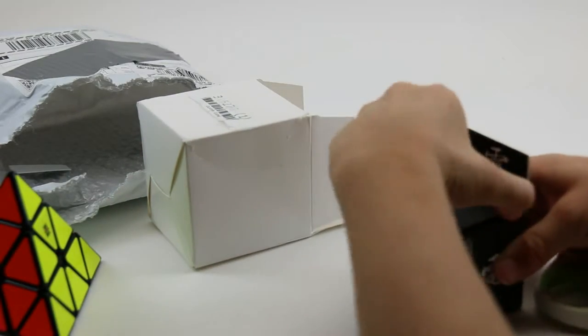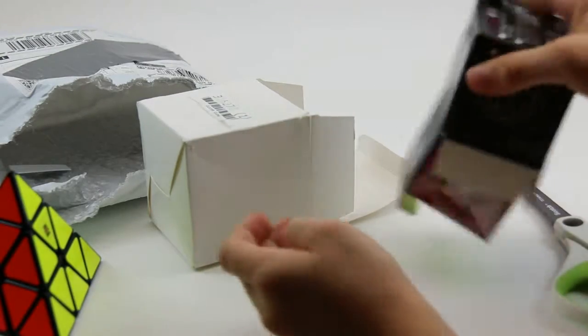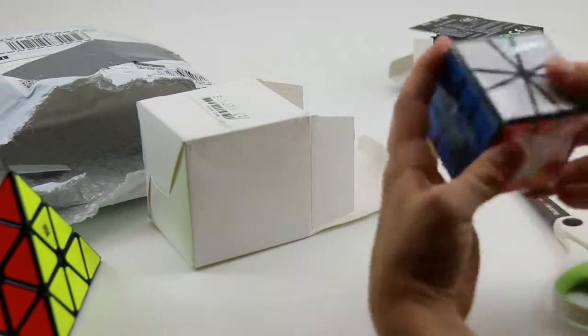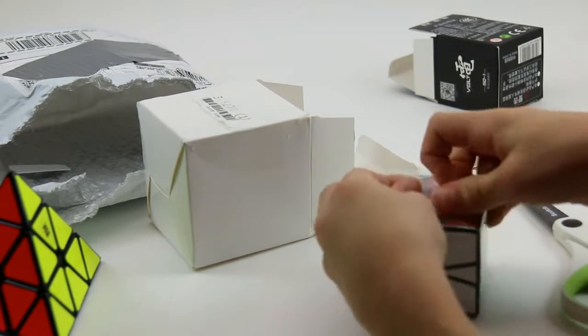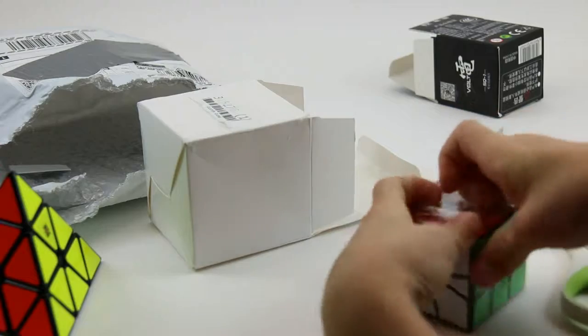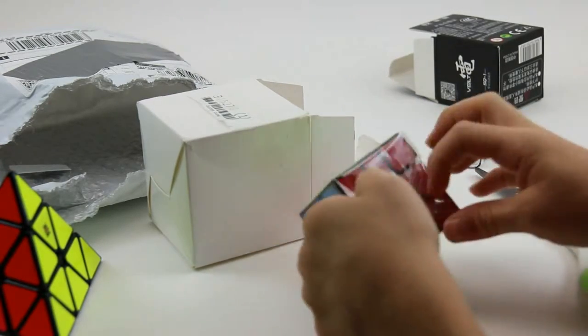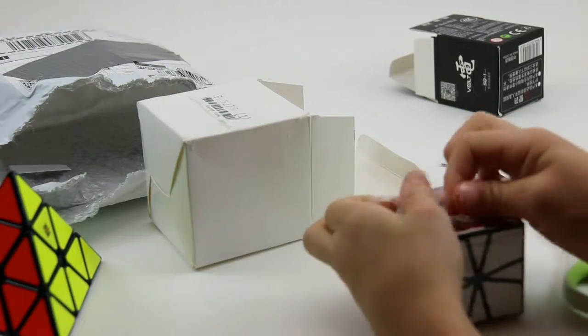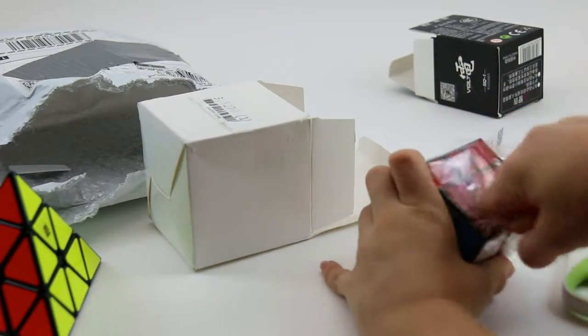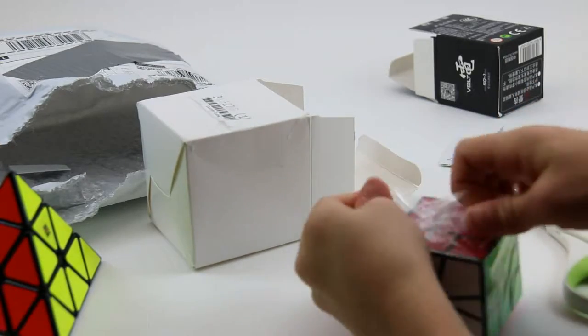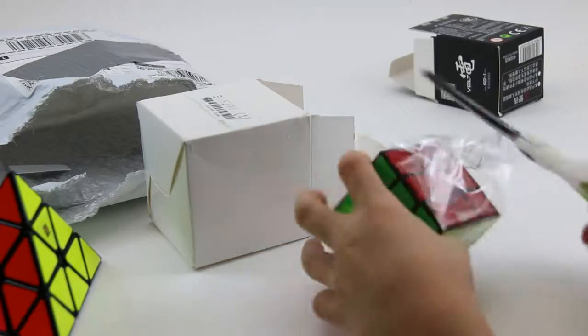Let's open the X-Man Volt square one. I've tried this at a competition, and it's really good. I am actually competing in a competition in about a month. It's the Battle of Waterloo 2017. It's in Waterloo. And I'm going to be competing in square one.